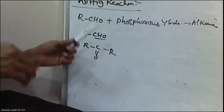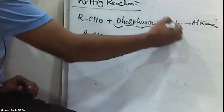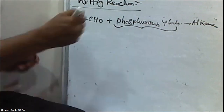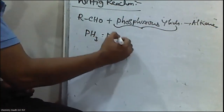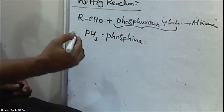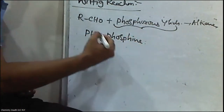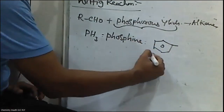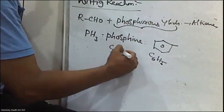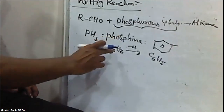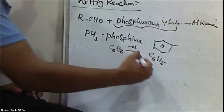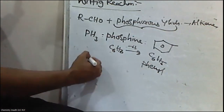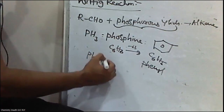When aldehydes or ketones are treated with phosphorous ylides, we need to know what phosphorous ylides are and how they are formed. PH3 is phosphine. In phosphine, if one hydrogen is replaced with a C6H5 group — the phenyl group — which is formed by removal of one hydrogen from benzene, and if all the hydrogens in phosphine are replaced with phenyl groups, that compound is called triphenylphosphine.